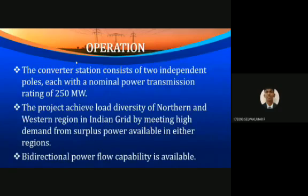The converter station consists of two independent poles, each with a nominal power transmission rating of 250 megawatts. The project achieved load diversity of the northern and western regions in the Indian grid by meeting high demand from surplus power available in either region, and bidirectional power flow capability is available in this station.